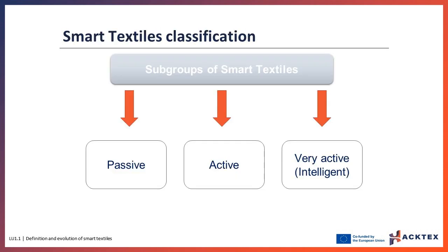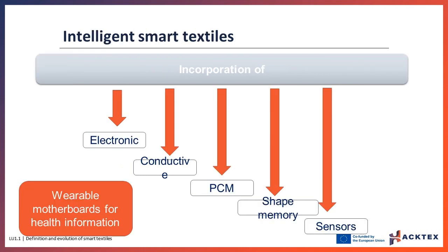Smart textiles integrate a high level of intelligence and can be classified into three subgroups: passive, active, and very active or intelligent smart textiles. They can be made by incorporating electronic materials, conductive polymers, encapsulated phase change materials, shape memory polymers and materials, and other electronic sensors and communication equipment. These materials interact according to their designed feature with the stimuli in their environment.